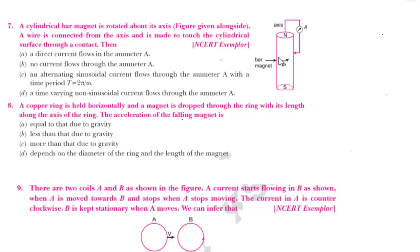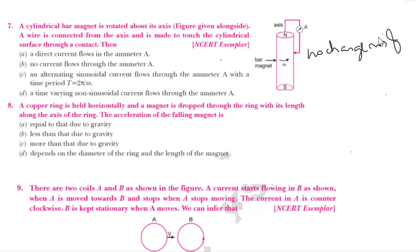But is the magnetic flux linked with the circuit changing or not? Since the cylindrical bar magnet is rotating about its own axis, there is no change in magnetic flux. Magnetic flux linked with the circuit is not changing. Hence, no current passes through the ammeter.